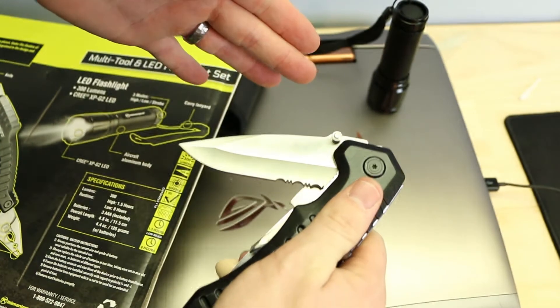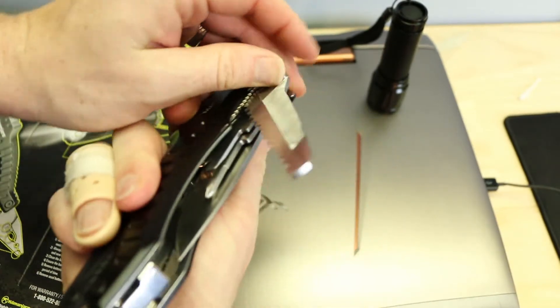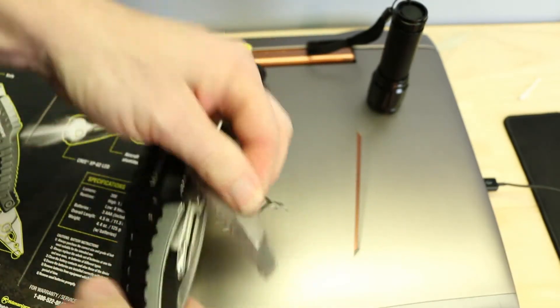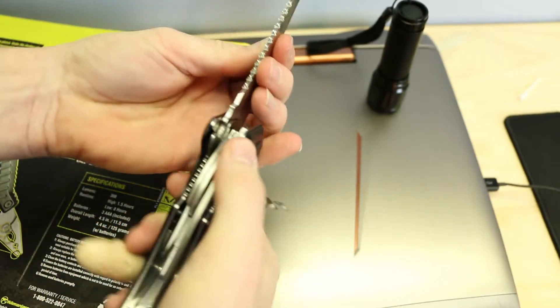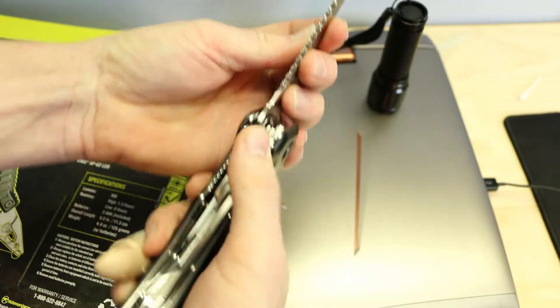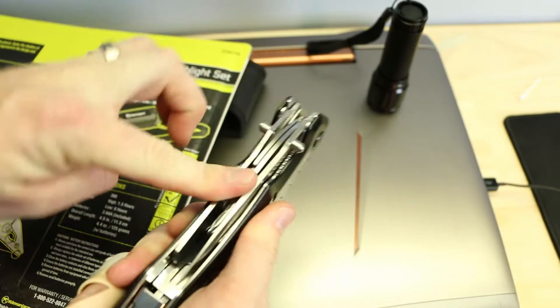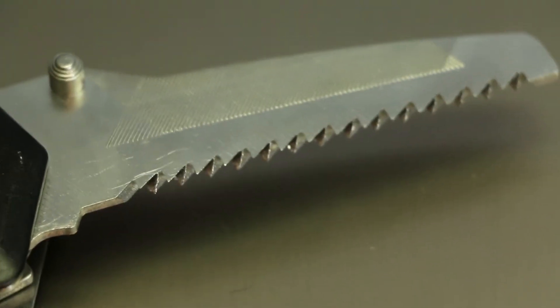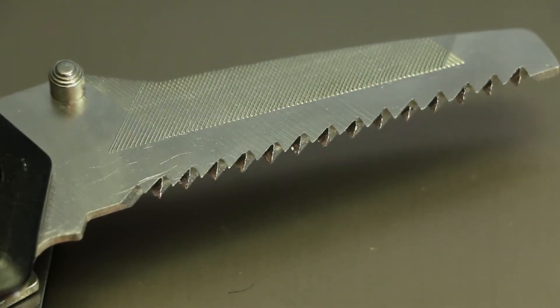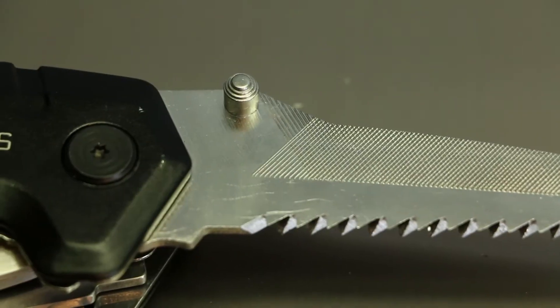But yeah, the main knife blade and the saw blade, which I'll show you a close-up soon, they both do lock into place, and they've got this little piece here that lets you unlock it and close it. But yeah, this saw's pretty gnarly looking. I bet it could tear up some wood pretty good, I'm pretty sure.